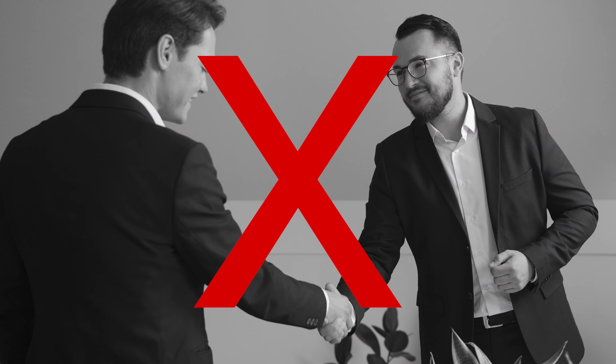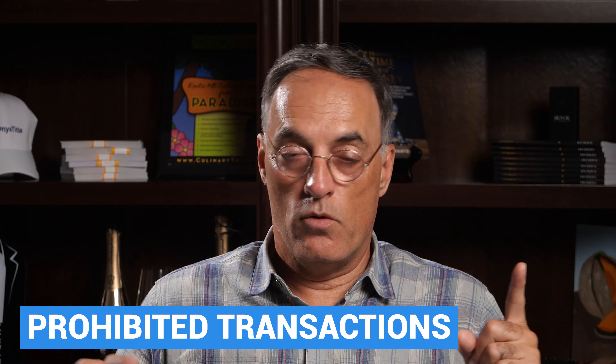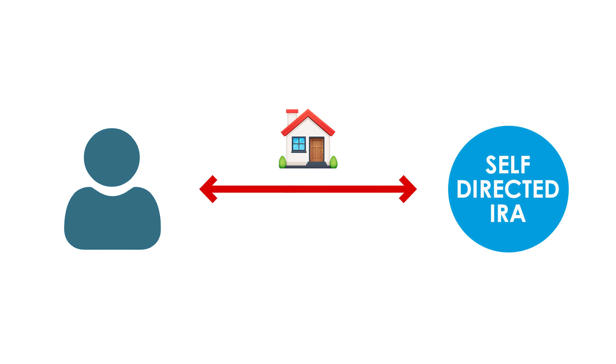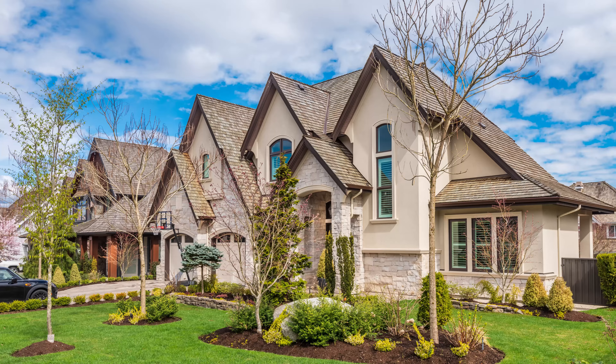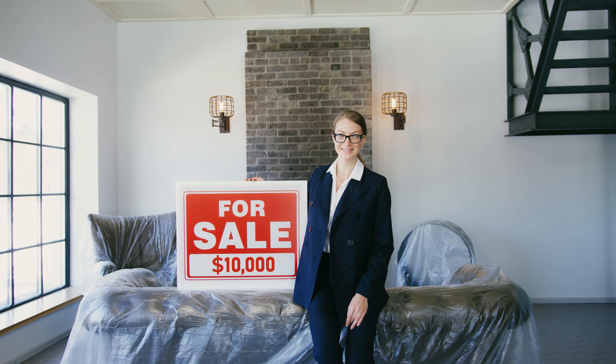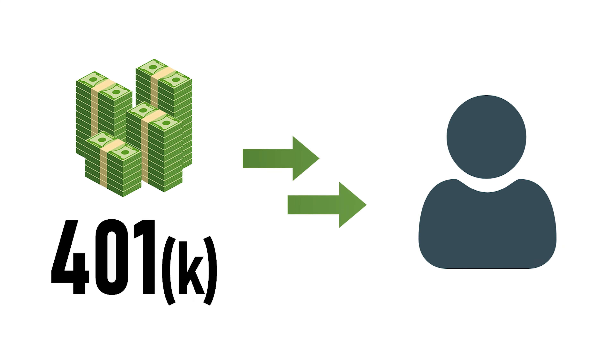There are two things to cover: prohibited transactions and disqualified people. For prohibited transactions, you can't sell, buy, or exchange properties in any way between the Self-Directed IRA and yourself or disqualified persons. The IRS doesn't want you to game the system — buying something expensive and then selling it cheap on the back end, or vice versa, to inflate values and extract money from the 401k by tricking the system.